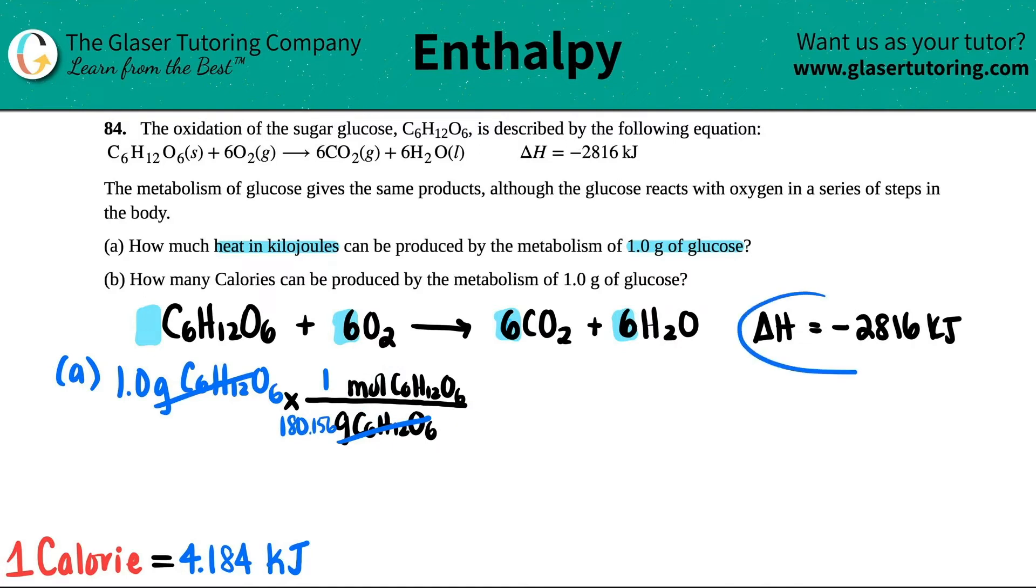Now we can use this value. This amount, negative 2,816 kilojoules, is per what mole is on the top of what compound you want.